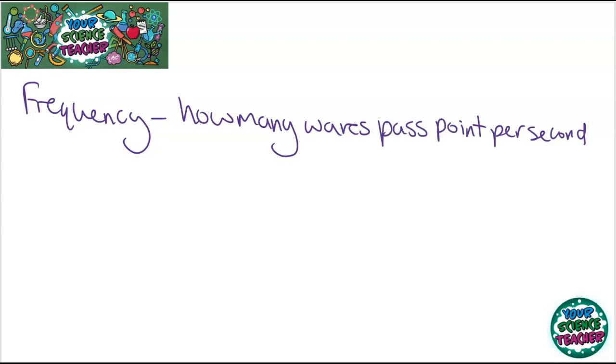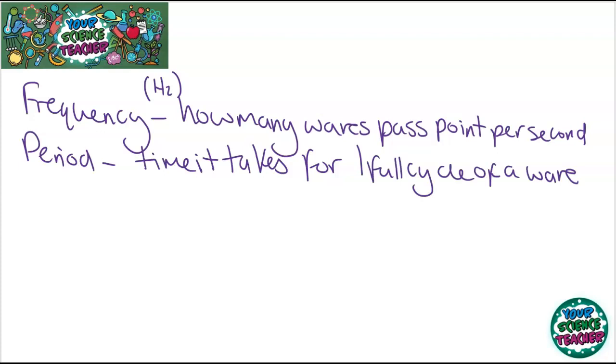There are also a couple more definitions you need to know about your waves. The first one is frequency, and the frequency of a wave is how many waves pass a certain point per second, and it is measured with the unit of hertz. The other key definition you need to know is period, and that is the time it takes for one full cycle of a wave. These two are interlinked with the triangle you know that I like to use triangles when doing calculations. Frequency equals one over period, or period equals one over frequency. This t represents period and the f is frequency.